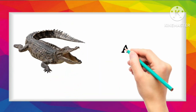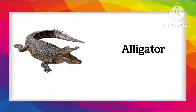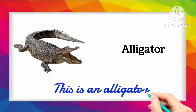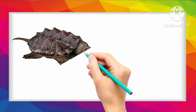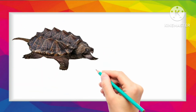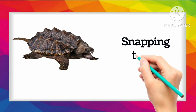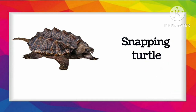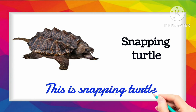And which animal is this kids? This is alligator. And which animal is this kids? This is snapping turtle. Once more, this is snapping turtle.